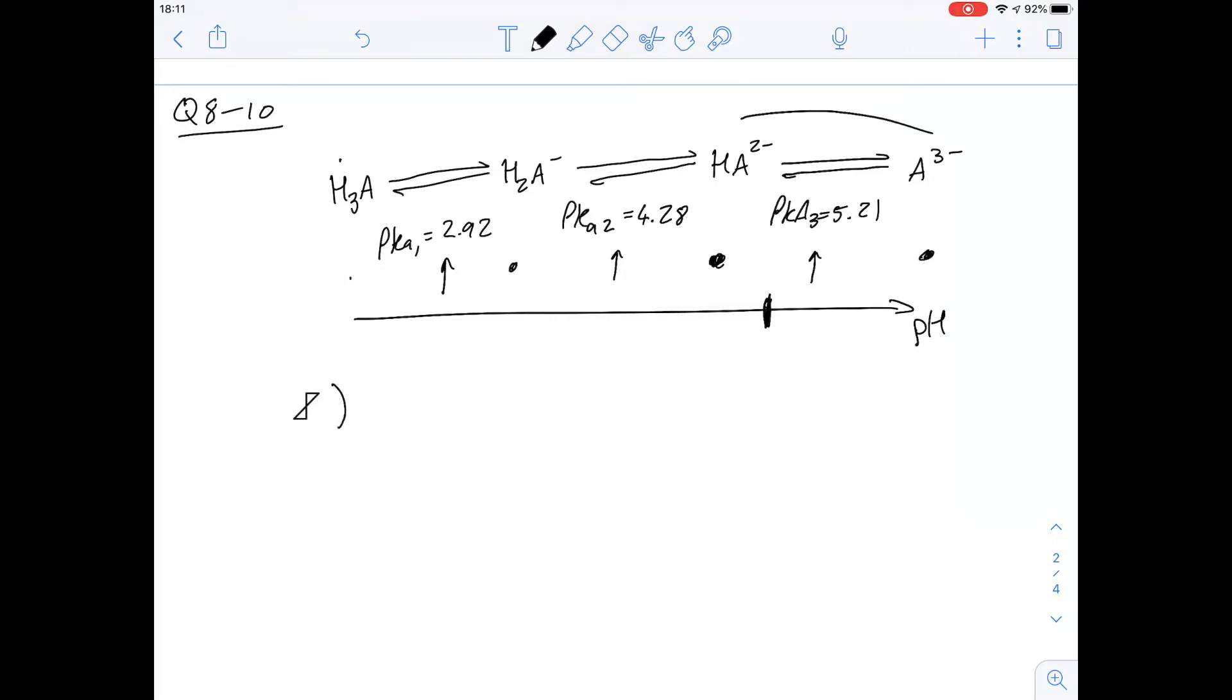Okay, so number 9 says at what pH value are the concentrations equal? And essentially we've got a single negative ion and a double negative ion—so basically these two species.